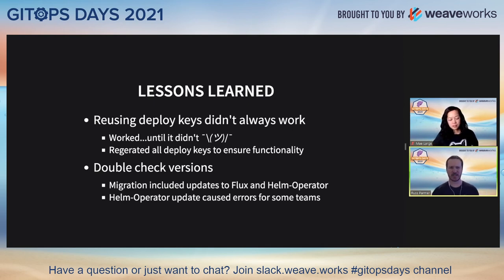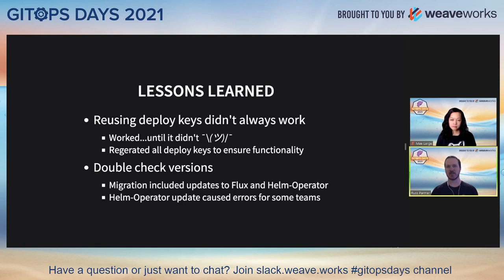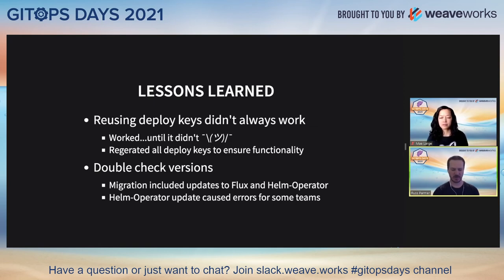Another lesson learned: double-check your versions. We upgraded the new Flux and Helm operator instances in all namespaces to the latest version. In our sandbox, dev testing, and even the prod friends-and-family event, we didn't have any errors. Sure enough, when we rolled to production, we found some errors — specifically a version change that broke one particular team's Helm operator. It took a while to find the error, but they were using an older version and the jump to the newer version was just too big.